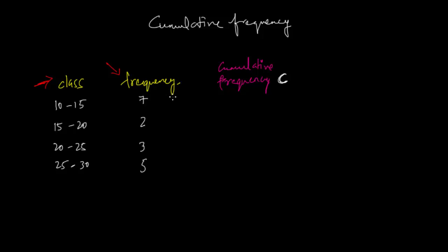What you need to do is the first one you will have to put as it is. Take the first value from the frequency column and put it as it is in the cumulative frequency column, and from here every time you will need to add the number from the frequency column to its predecessor.